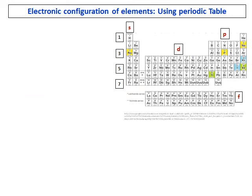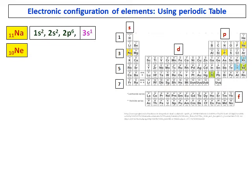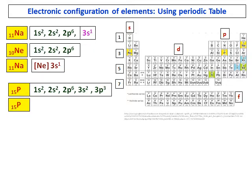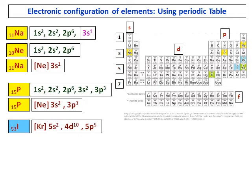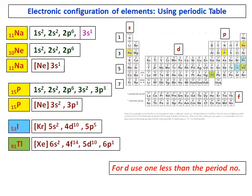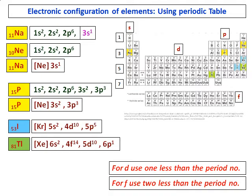Using the AFAS diagram is a long method, so there is an easier way using the periodic table. For sodium, consider the inert gas before it — neon — then count through the blocks. Sodium is in the S block, so its configuration is [Ne] 3s1. Similarly, phosphorus is [Ne] 3s2 3p3. For the D block, use n−1, and for the F block, use n−2.